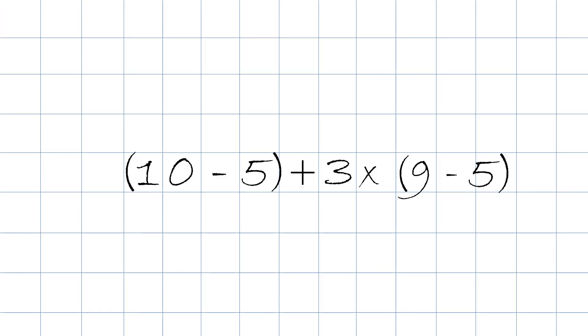Here we have 10 minus 5 in parentheses plus 3 times 9 minus 5 in the parentheses. Remember, rule number 1 or step number 1 is parentheses.